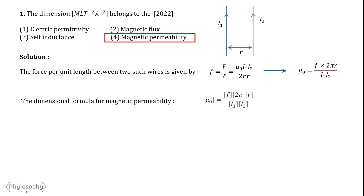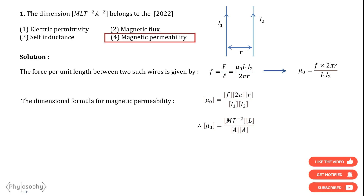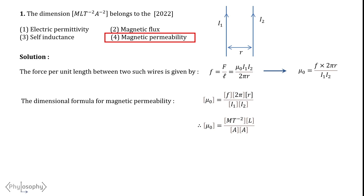To derive the dimensional formula for mu naught, you only need to know the dimensional formulas for F, R, I1 and I2. 2 pi is a dimensionless constant, so we can drop this term. The dimension of mu naught equals MT⁻², which is the dimensional formula for force per unit length. The dimensional formula for R is L, and for I1 and I2 it is A (current in SI units). Calculating the powers properly, the dimensional formula for mu naught will be MLT⁻²A⁻². So the correct answer is option 4.